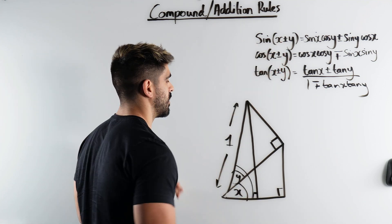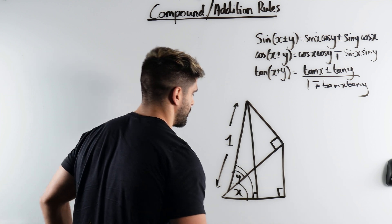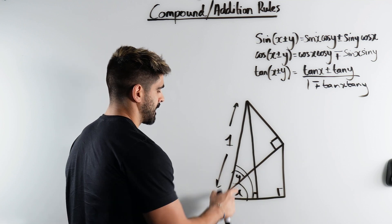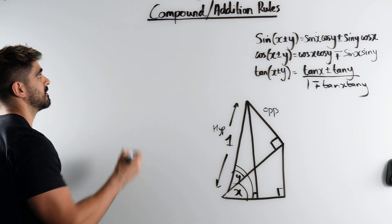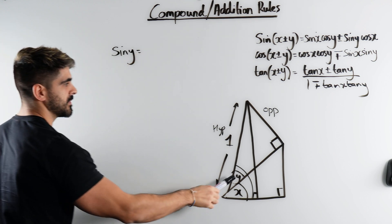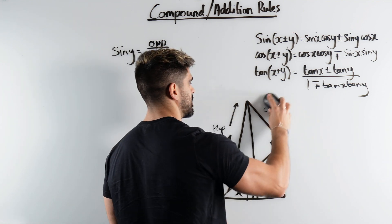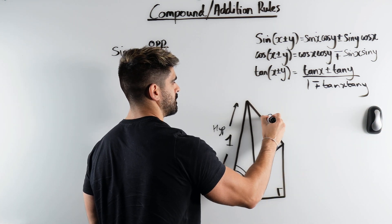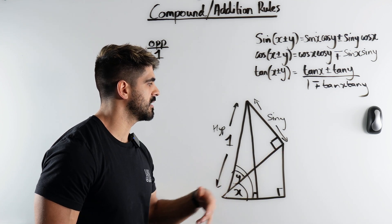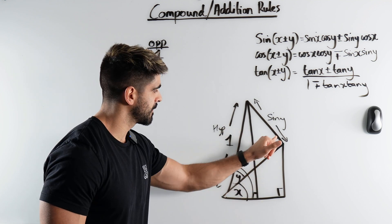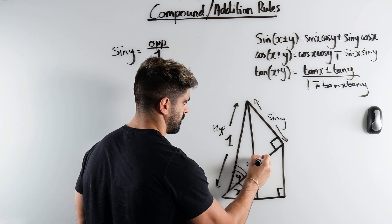So sine of x plus y would be the opposite, because the hypotenuse is 1, and the adjacent side would be cos of x plus y. Let's just work out all the lengths. If this angle is y, what would this side be? Well this is the opposite and this is the hypotenuse. So we're using sine. Sine of y is the opposite divided by the hypotenuse which is just 1, so that just means the opposite, this length here, is just sine of y. By similar argument we can work out the adjacent side. This adjacent side would be cos of y. So this is cos of y.